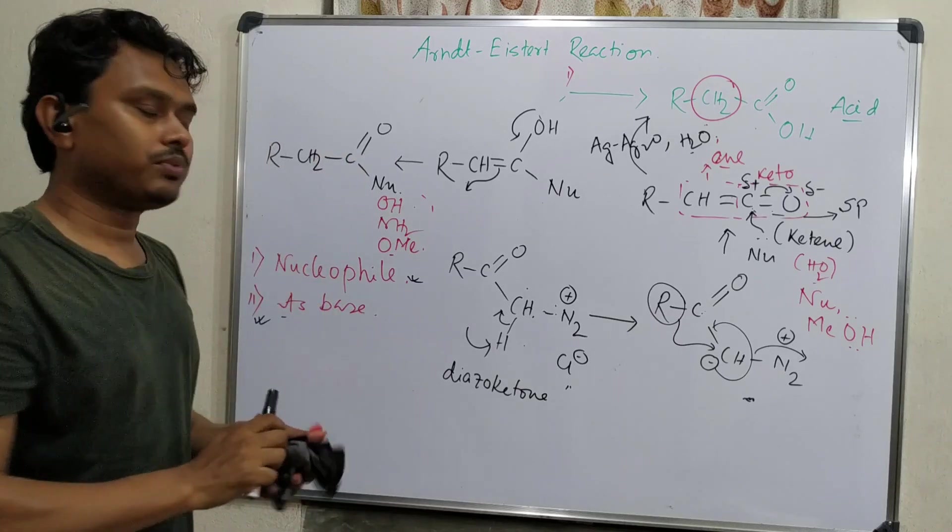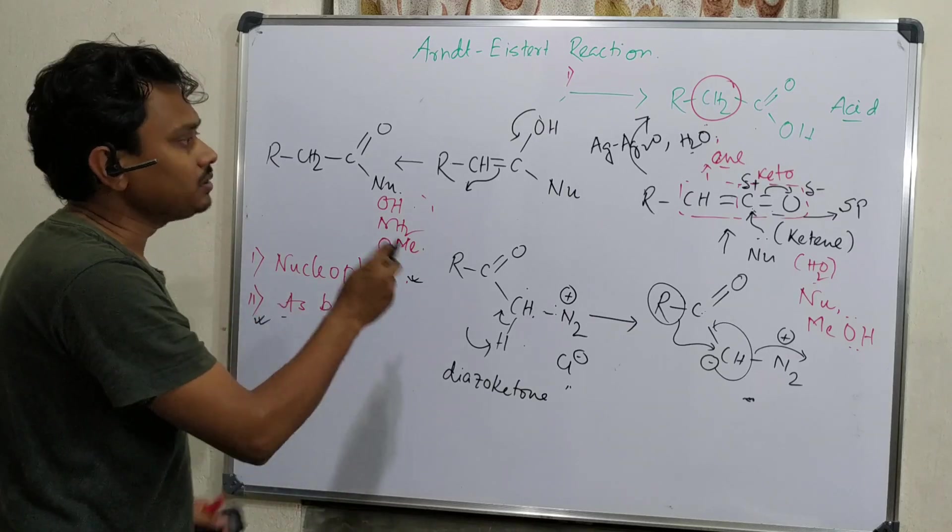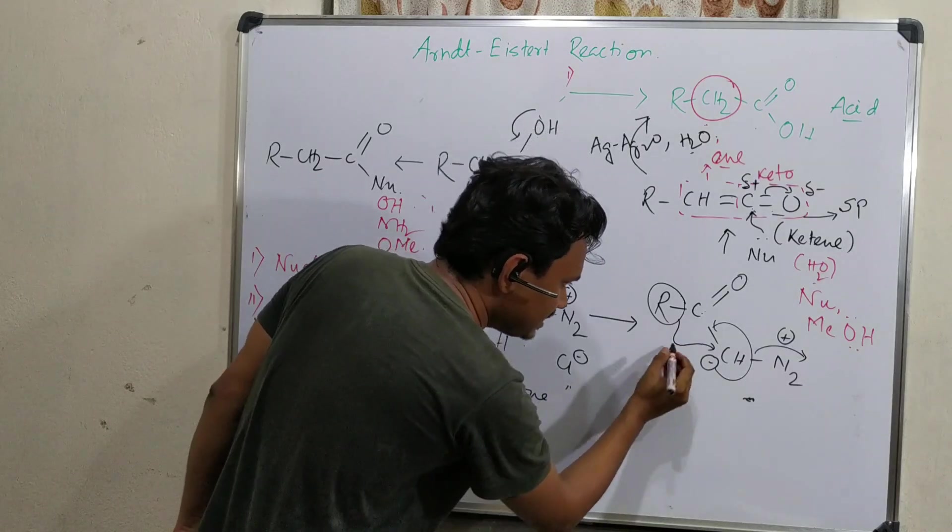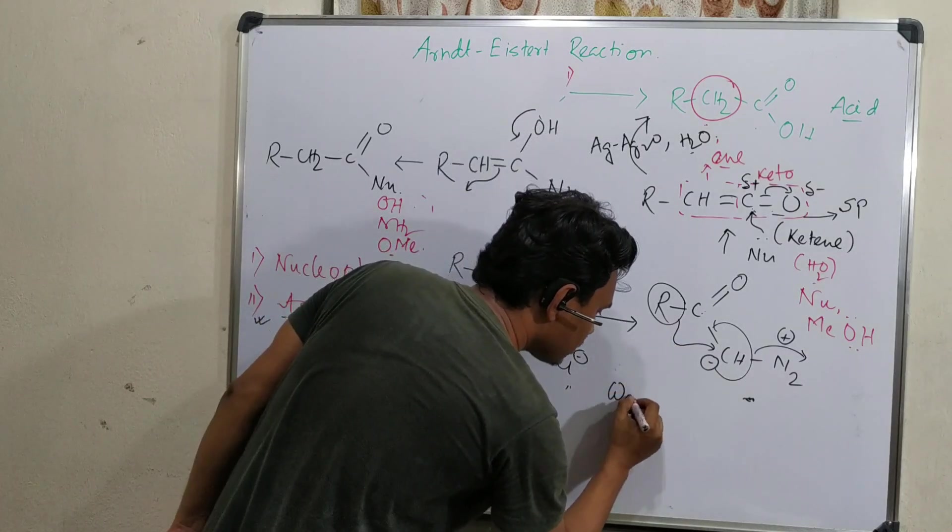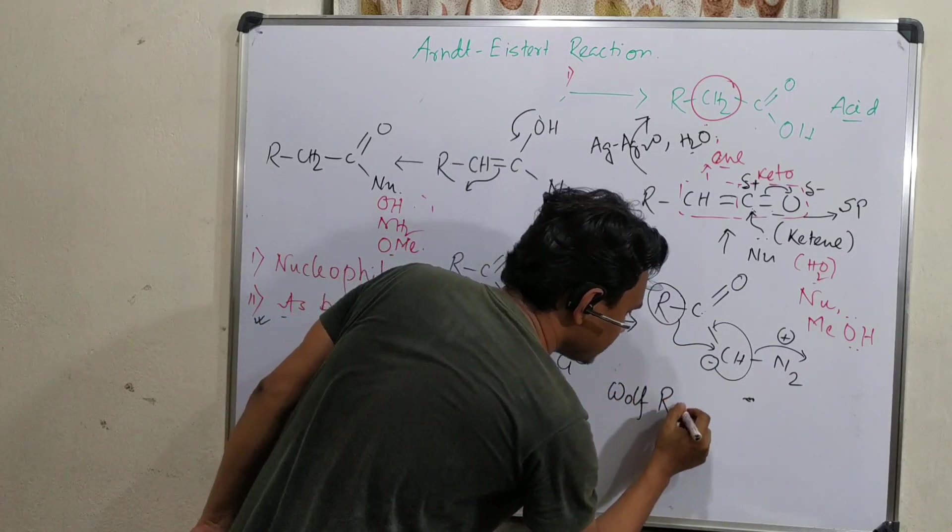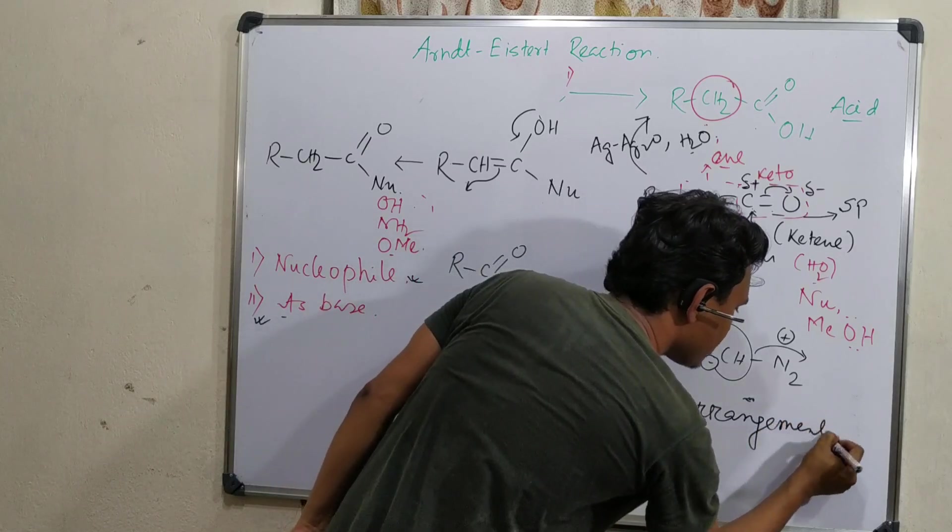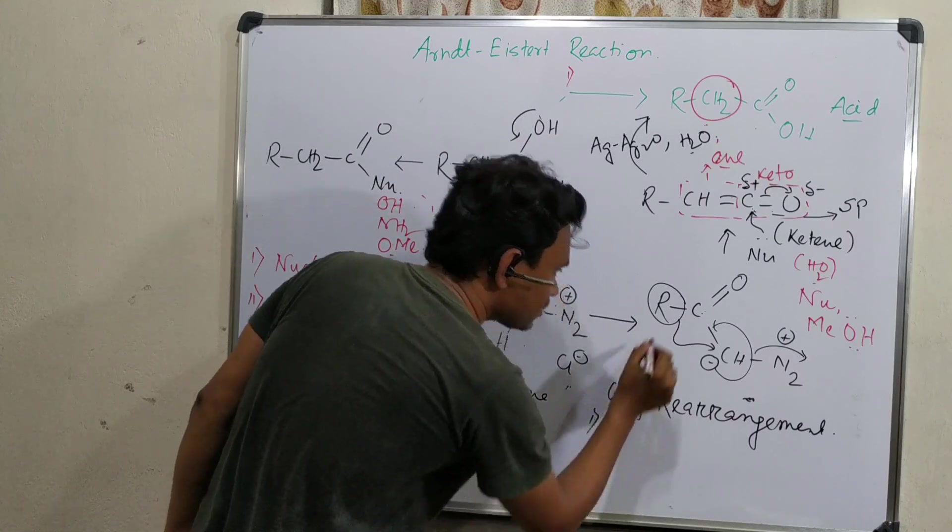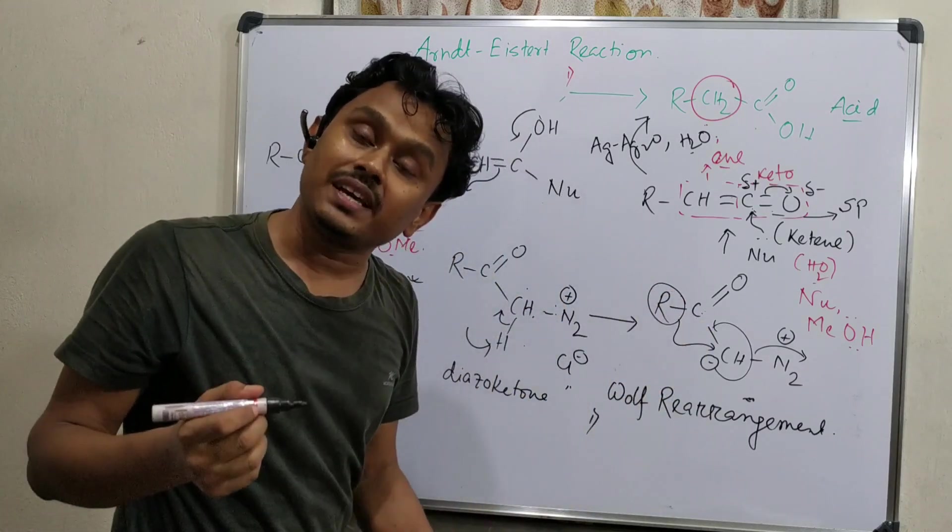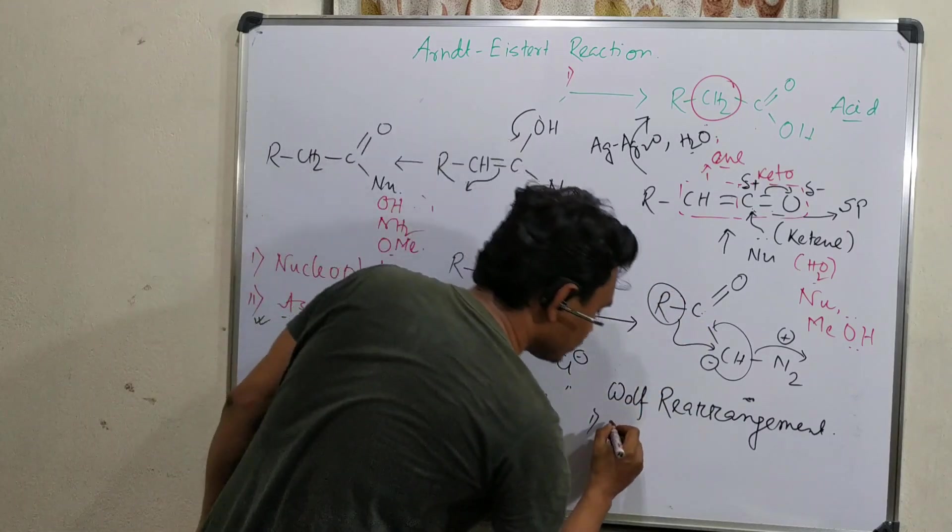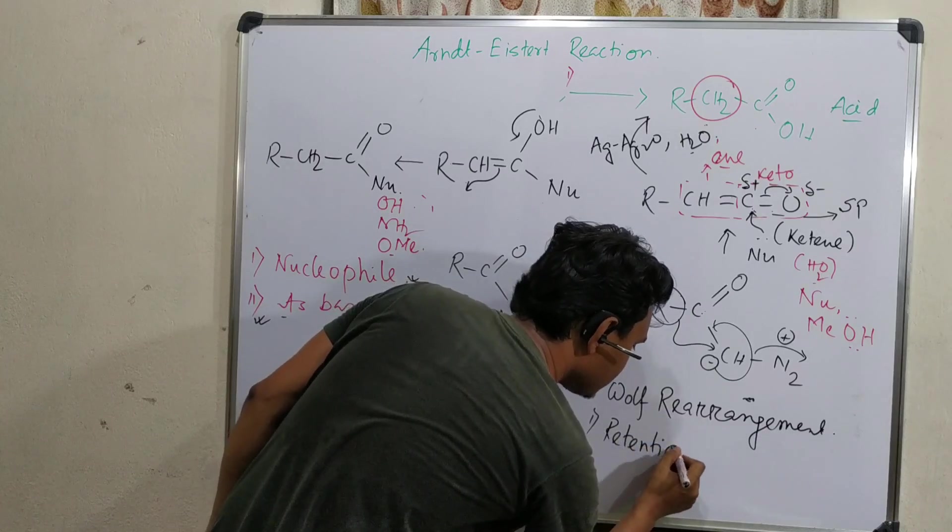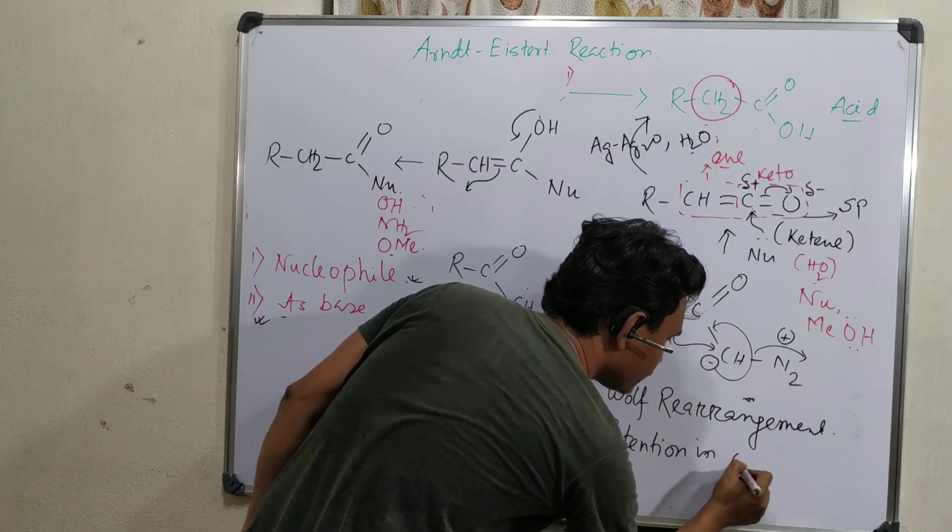Another thing: some important things are there in the middle. For example, this rearrangement. This rearrangement is called Wolf rearrangement. And what happens here? If the R group retains its configuration, so during rearrangement, retention in configuration.